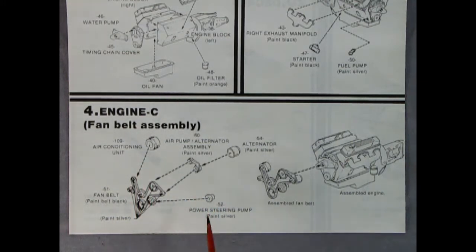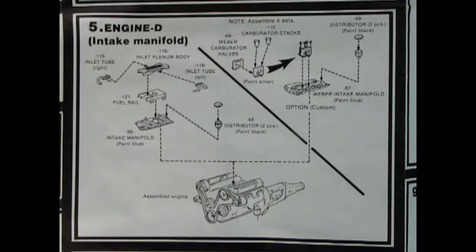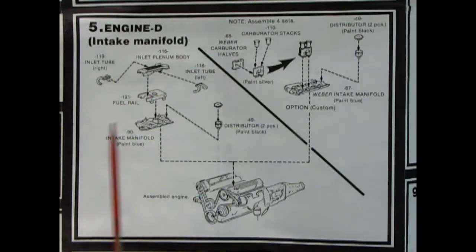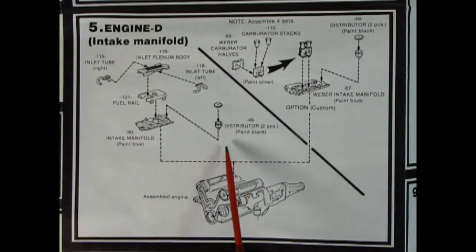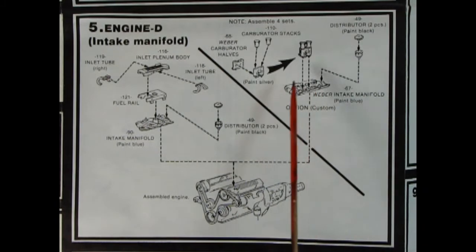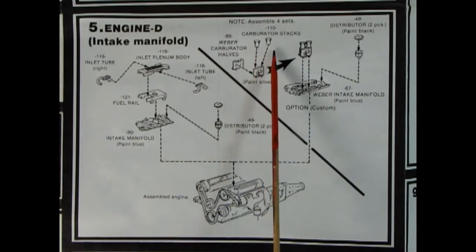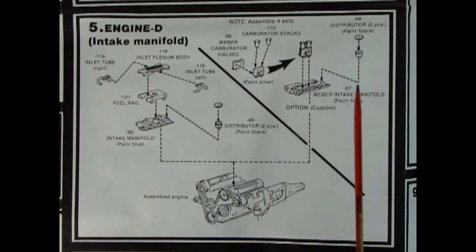Panel four shows this serpentine belt and the air conditioning. This time they tell you what the parts are, so that's an improvement over the '85 kit. We've got an air conditioner, an air pump with alternator assembly, and power steering pump. The entire assembly goes right on the front of our engine block. Panel five shows our intake manifold with the inlet plenum body and inlet tubes with the fuel rail underneath. You're supposed to paint it blue. Then we've got a distributor. If you want the Weber carb version, you glue the two sides together and it stacks on top. Either of your choice will drop onto the top of the engine block.